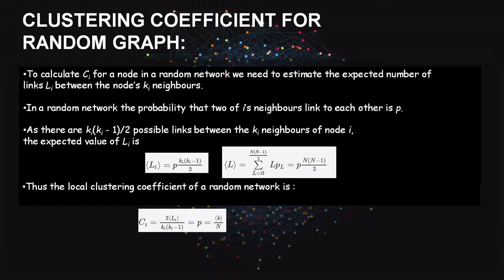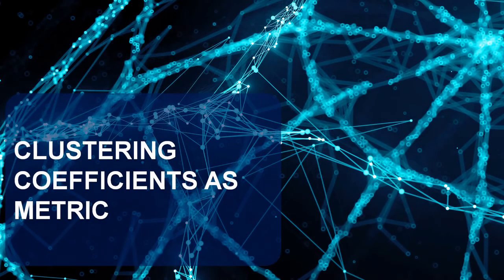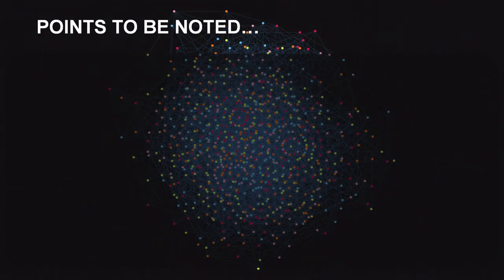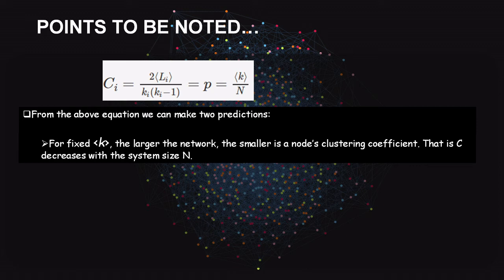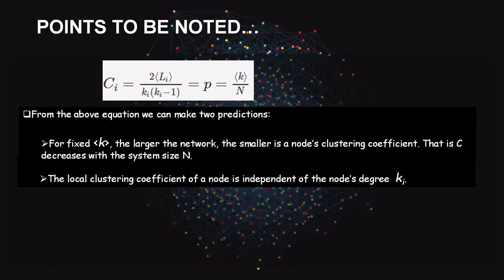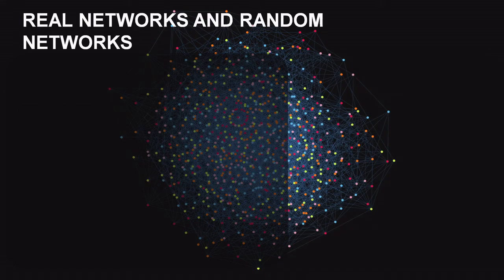From the clustering coefficient equation for a random graph we can make two predictions. First, for a fixed average degree k̄, the larger the network, the smaller a node's clustering coefficient — that is, C decreases with system size n. Second, the local clustering coefficient of a node is independent of the node's degree ki.